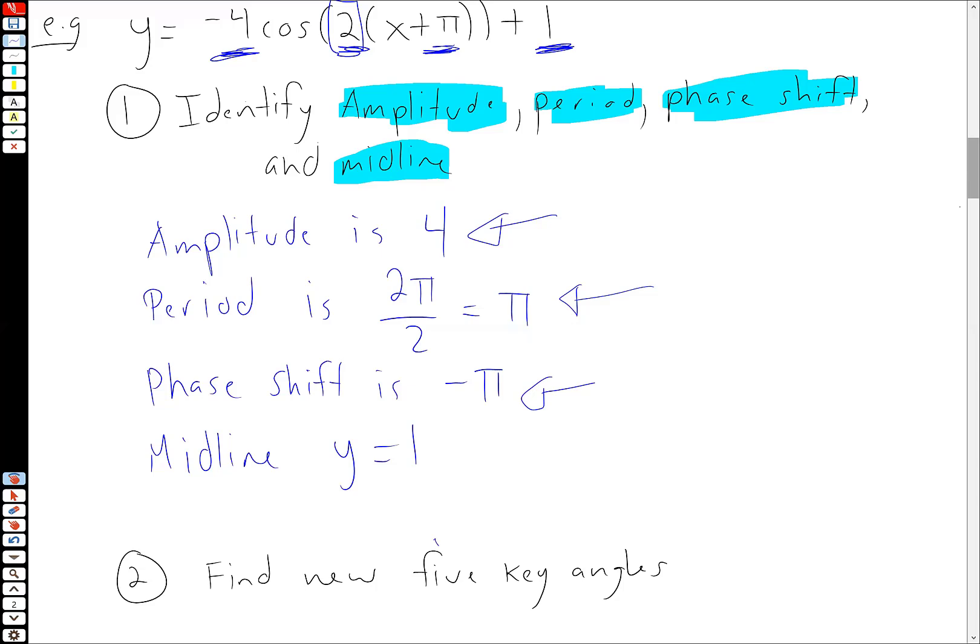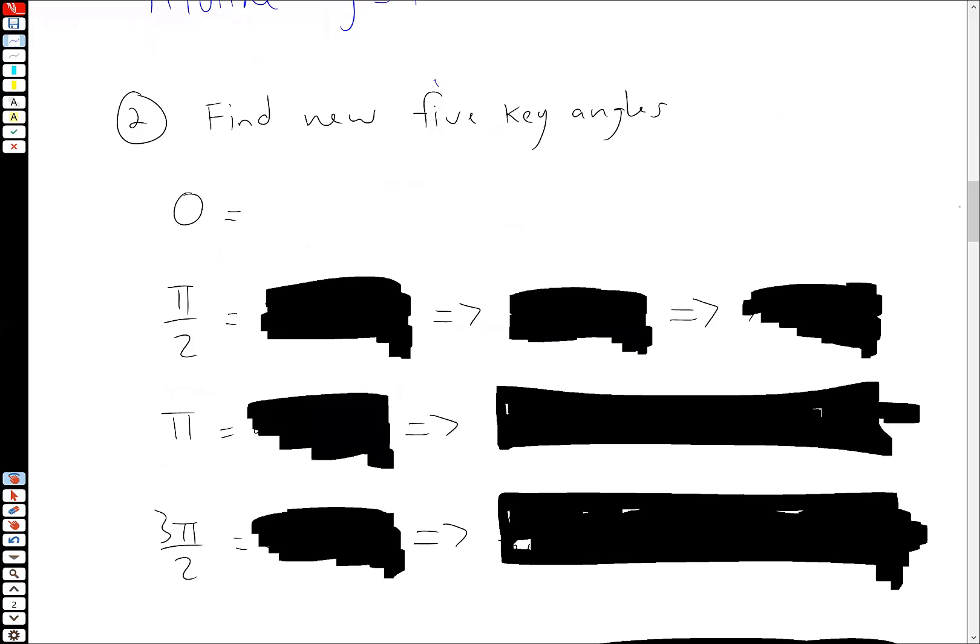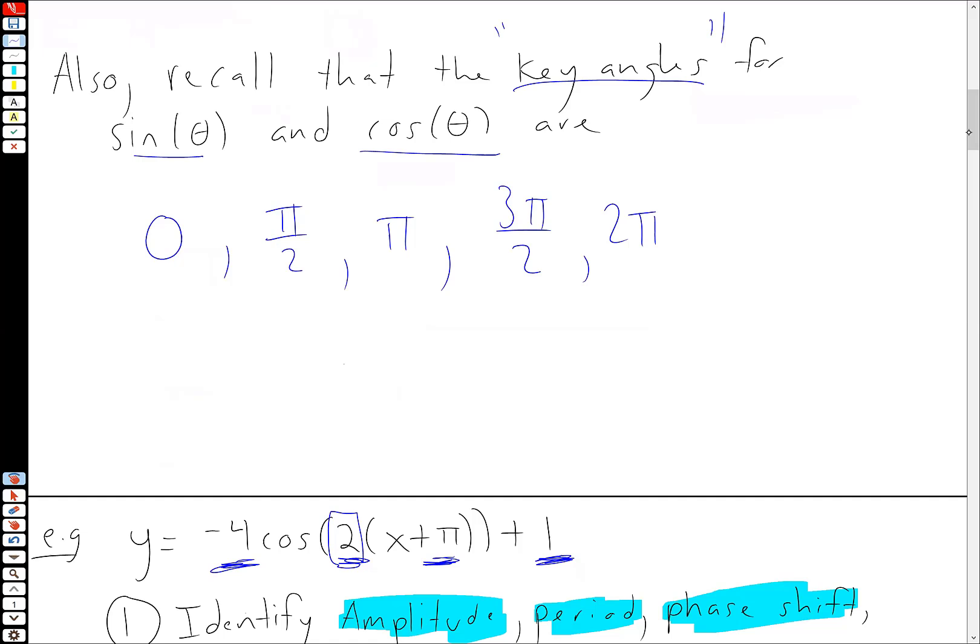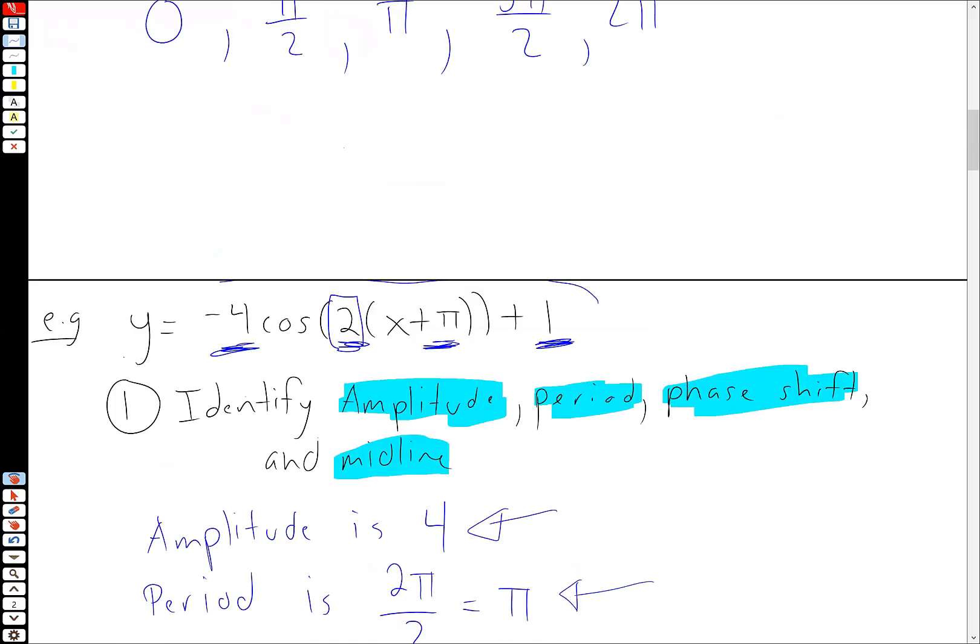All right. Now for some arithmetic. So next, we want to find nice angles to plug in. So we want to find what I'm going to call the new five key angles. Remember we had all the old five key angles here, 0, π over 2, π, 3π over 2, and 2π. But the problem with a transformed trig function like this, these angles have moved. And so what we want to do first is figure out, well, where have they moved to?